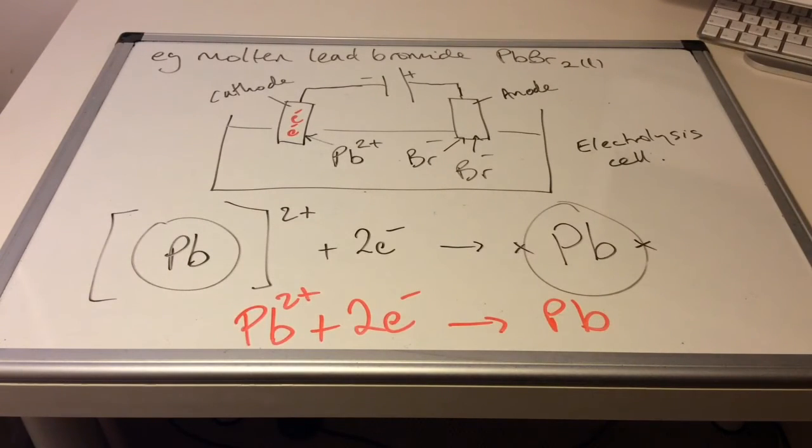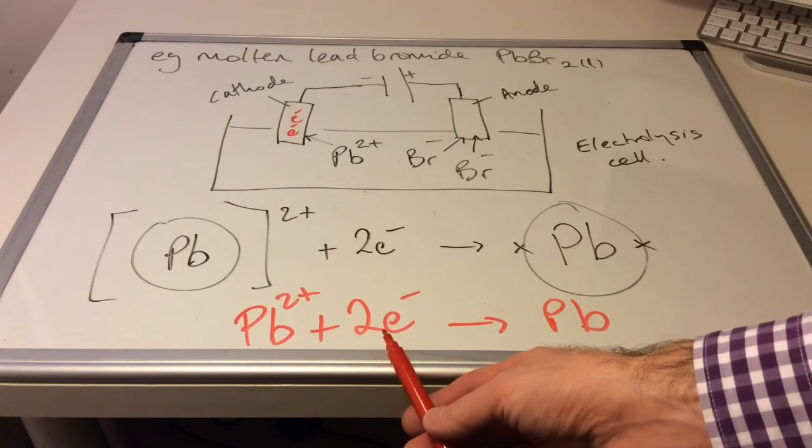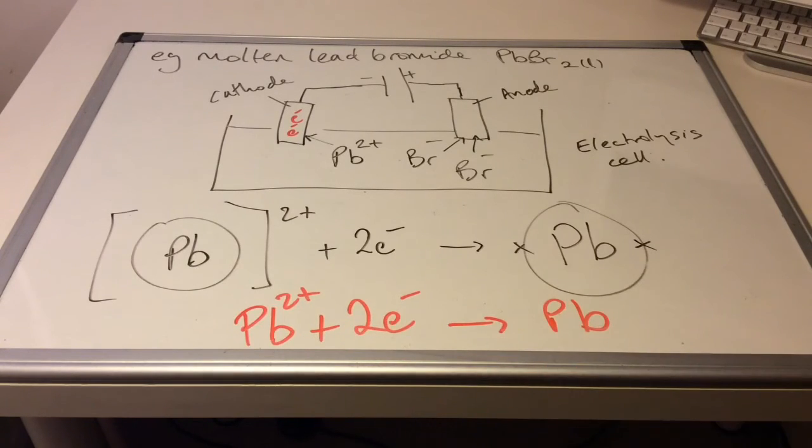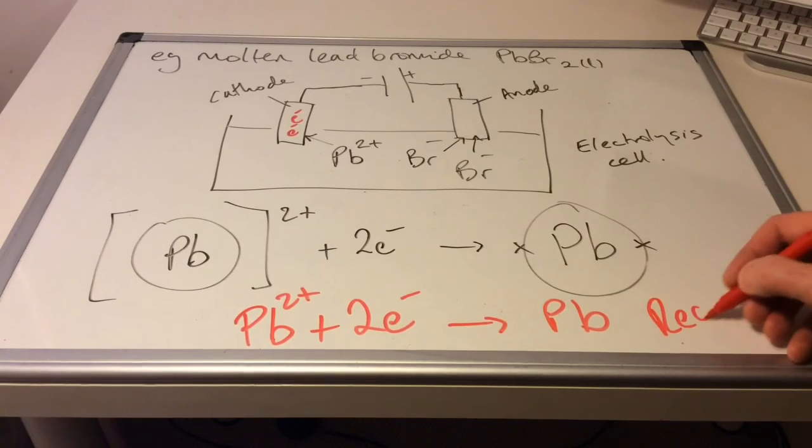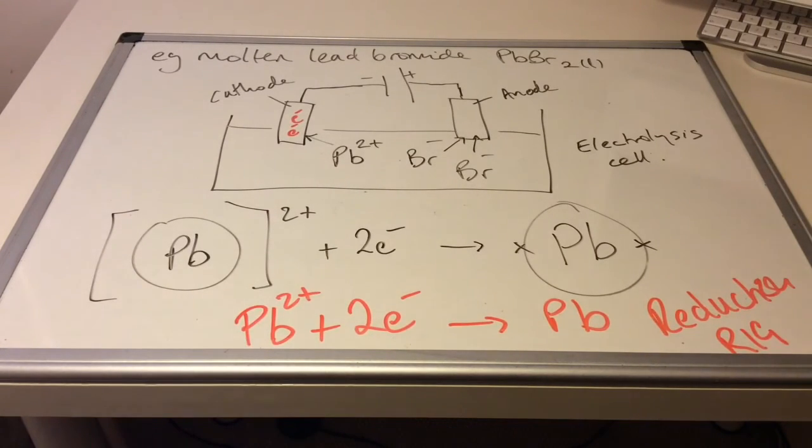So there's the half equation for the process taking place at the cathode. And you can see it's the opposite way around to before because this time we're gaining electrons. So this is what we call a reduction process. And the way to remember it is the word RIG. Reduction is gain of electrons.